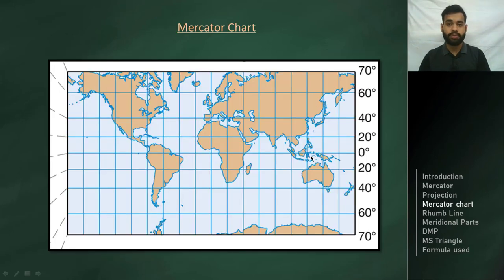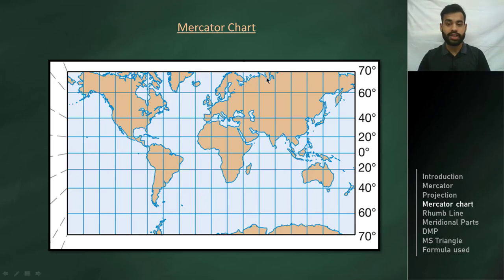Let's discuss a few properties of the Mercator chart. The equator appears as a straight line. The meridians are parallel to each other, appear as straight lines, and are equidistant from each other. Unlike meridians on the globe which converge towards the poles, the distance between two consecutive meridians is constant, so one minute of D-Long is the same anywhere on this chart. All meridians cut the equator at right angles, and all meridians cut all other parallels of latitude at right angles as well.